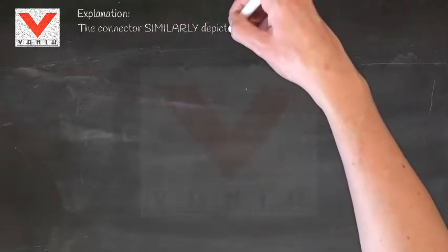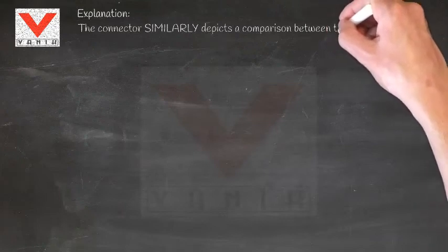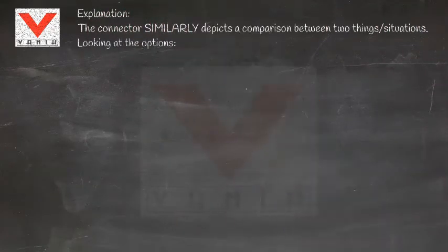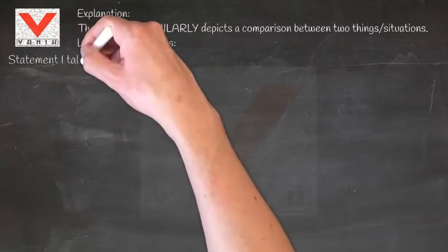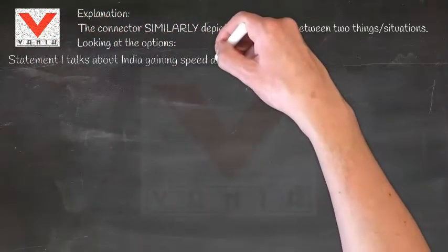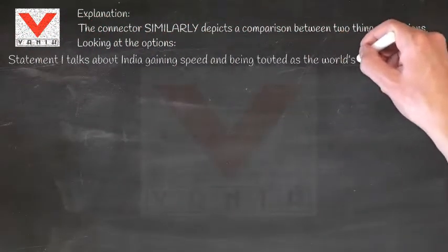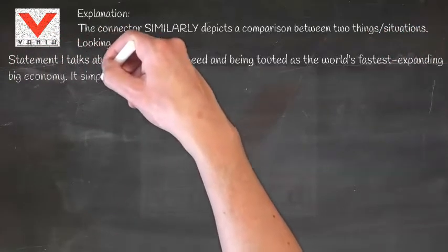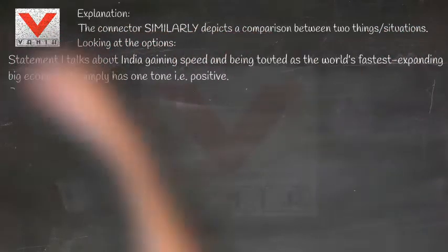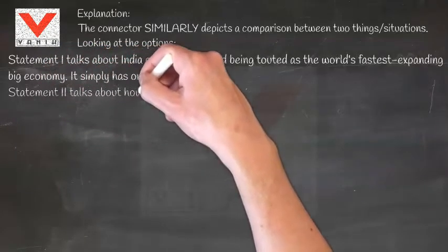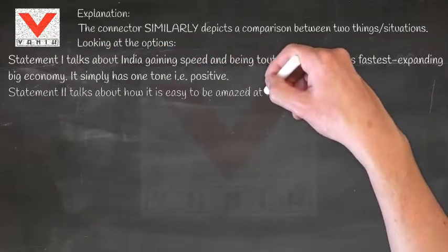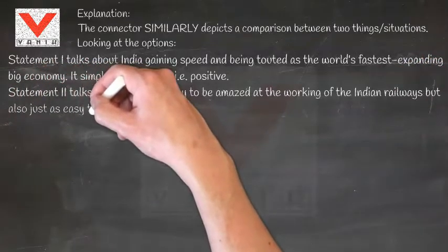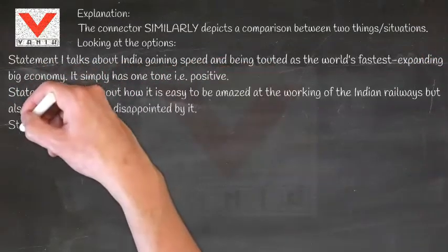Explanation: The connector 'similarly' depicts a comparison between two things or situations. Looking at the options — Statement 1 talks about India gaining speed and being touted as the world's fastest expanding big economy; it simply has one tone, that is positive. Statement 2 talks about how it is easy to be amazed at the working of the Indian railways but also just as easy to be disappointed by it.